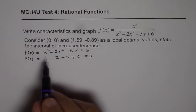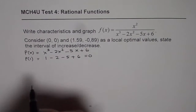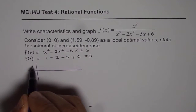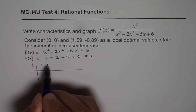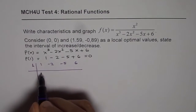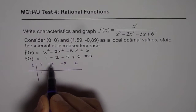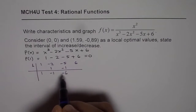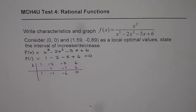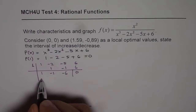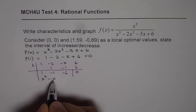We can do long division, but I will use synthetic division to find the other factors. Dividing by 1, with coefficients 1, -2, -5, and +6: bring down 1, multiply by 1 to get 1, adding gives -1, multiply -1, adding gives -6, multiply 6, remainder is 0. That gives us the quadratic x² minus x minus 6.